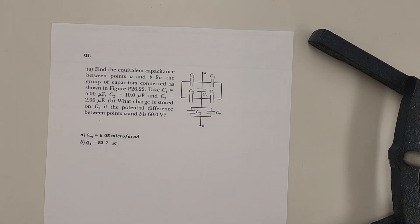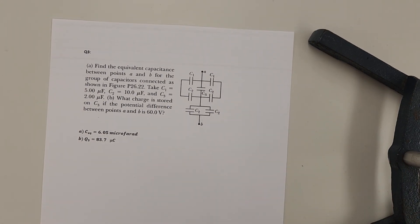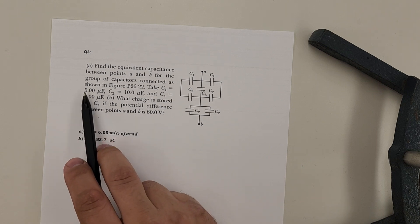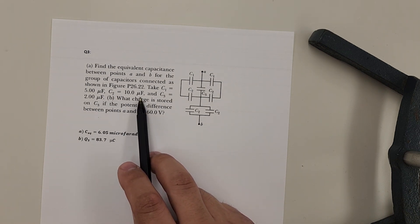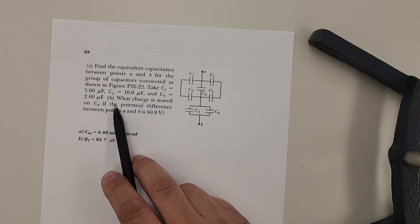Okay, question three. Find the equivalence capacitance between points A and B for this group of capacitors. C1 will be 5 microfarad, C2 will be 10 microfarad, C3 is 2 microfarad.